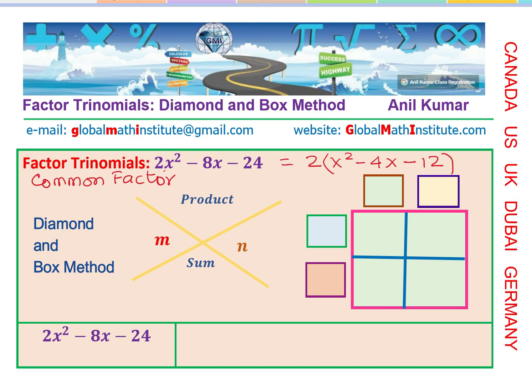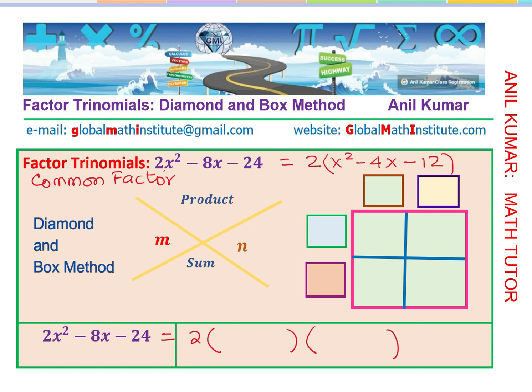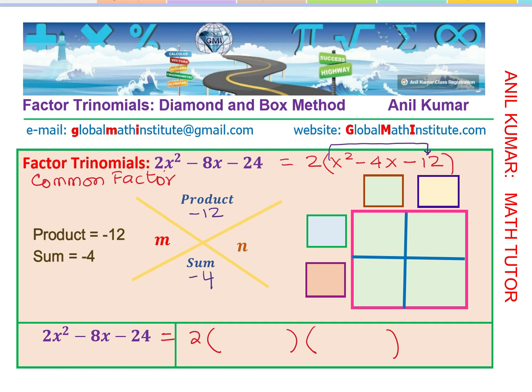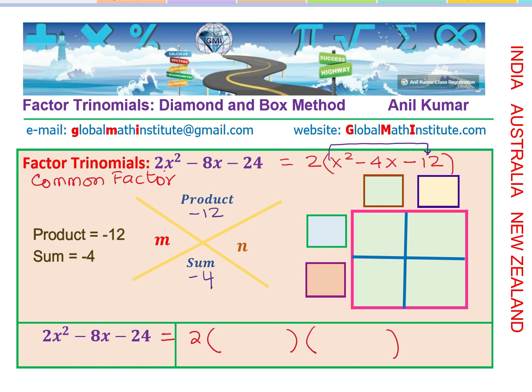Now apply the diamond and box method to factor x² − 4x − 12. The leading coefficient is now 1 inside. We write it as 2 times the product of two binomials, which we'll figure out from the method. For a leading coefficient of 1, we need the product of the leading coefficient and constant term, which is −12, and the sum, which is −4.